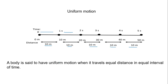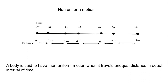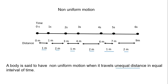So in equal interval of time the distance traveled by the object is equal, and this type of motion is known as uniform motion. Next, non-uniform motion: in this case the time interval is equal but the distance covered by the object is not equal. In the first interval it is covering 1 meter, second interval 2 meters, third interval 1 meter, fourth interval 2 meters. The distance covered by the object is not equal in equal interval of time.